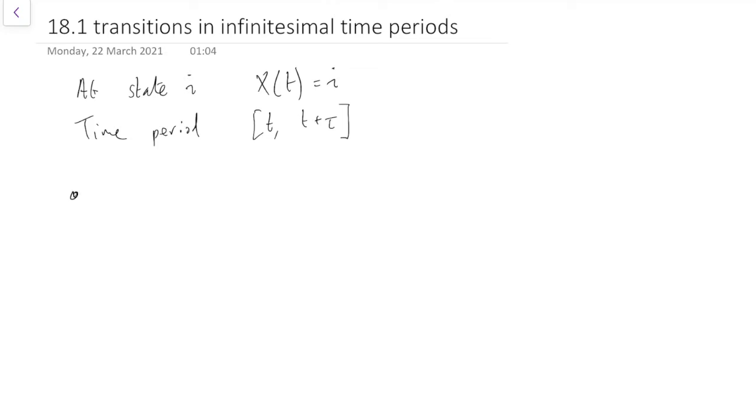So we might not move at all during that time because it's a very small period, so maybe our Markov chain won't jump anywhere. The probability that happens is the probability that our waiting time T1 is bigger than tau, because by the memoryless property this is still an exponential distribution.